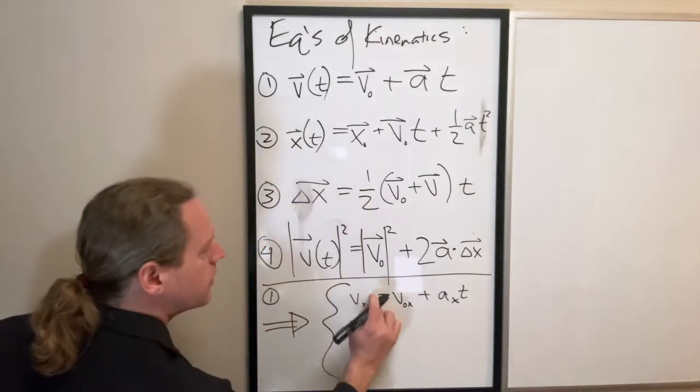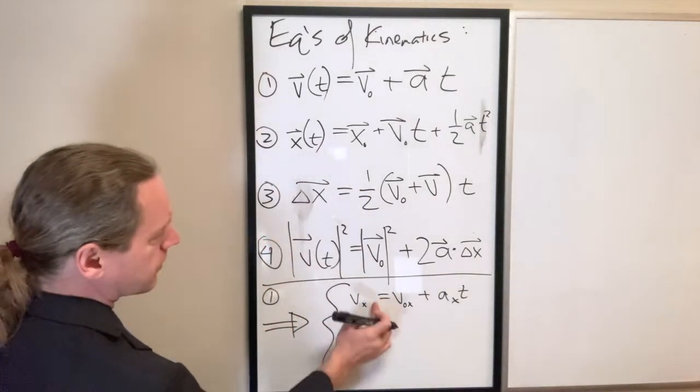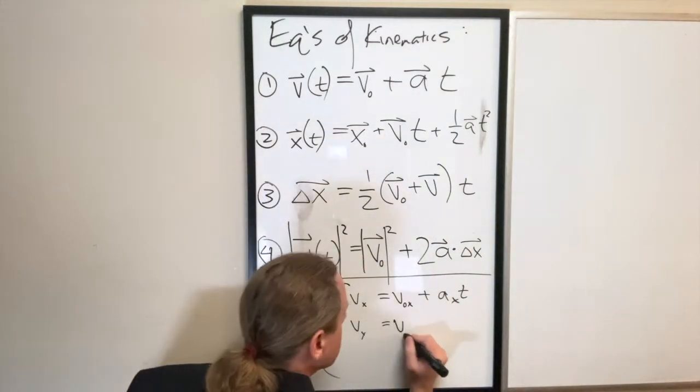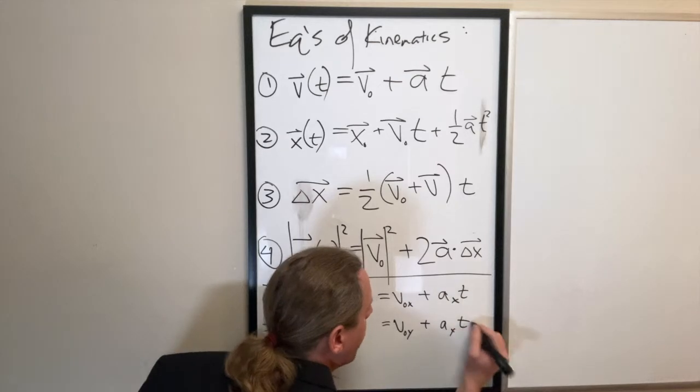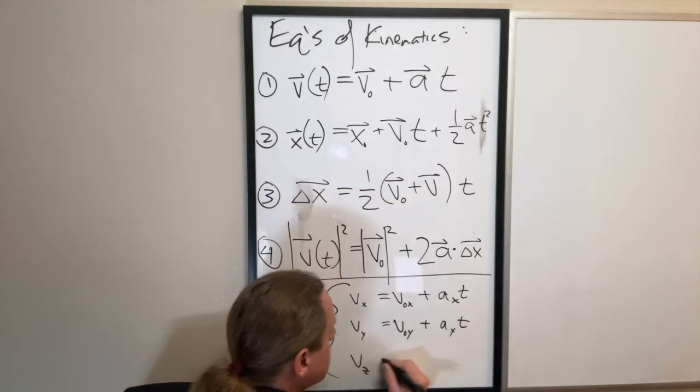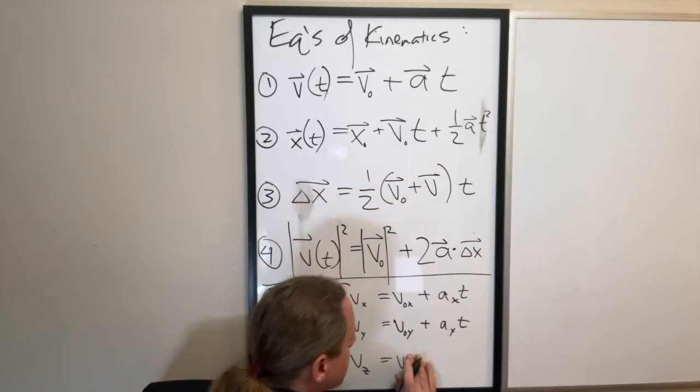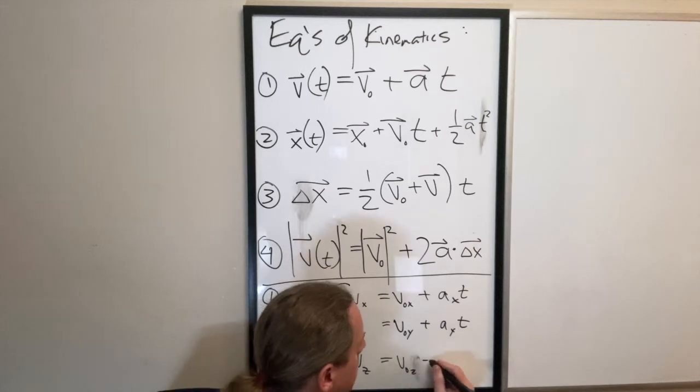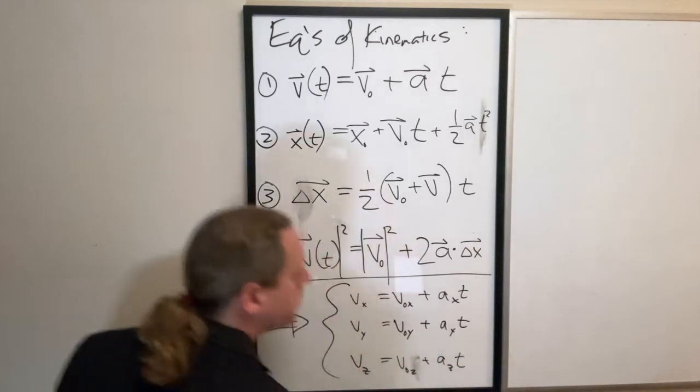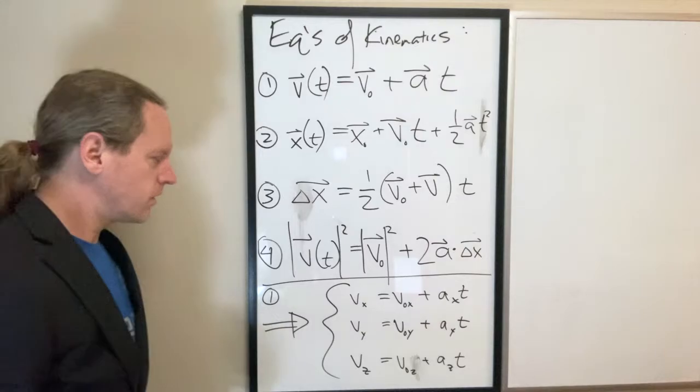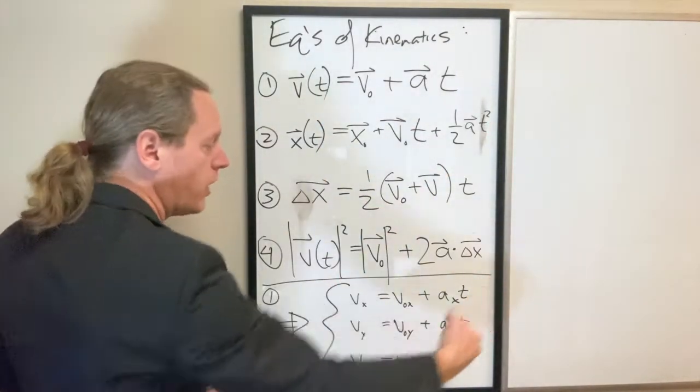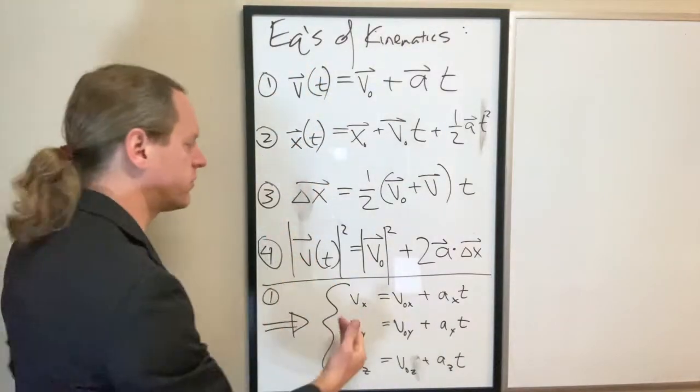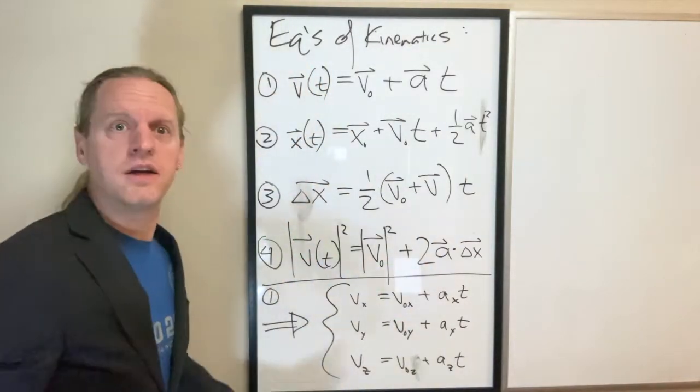Same thing in the y. Again, if I don't include a v naught subscript, that's the later or the final velocity. Anyway, the final y velocity is the initial y velocity plus ay t. The final z velocity is the initial z velocity plus az t.